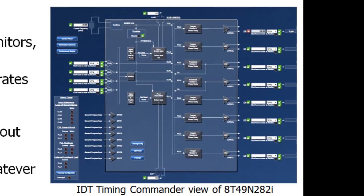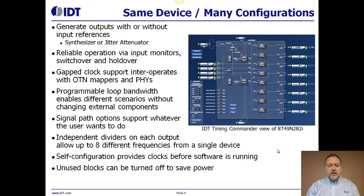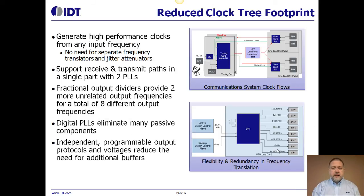As you can see from our Timing Commander screenshot from our software configuration tool, there are many different signal paths throughout the device, and using this tool a user is able to simply set up however they want to configure the device for their particular application. There are independent dividers on each output, allowing up to eight different frequencies to be generated from a single device. The device will configure itself from power up, so you can be providing output clocks at the frequency you need before your software is even loaded or running. Any functions that you don't end up using can be turned off to save power. One additional advantage of a highly integrated and flexible device like this is a reduced footprint on your PCB for this clock tree, eliminating the need for separate frequency translators and jitter attenuators — those can be combined into a single device generating the desired frequency and performance.